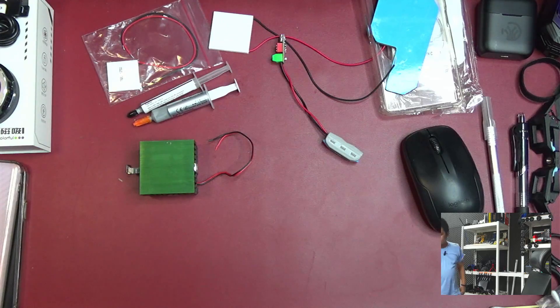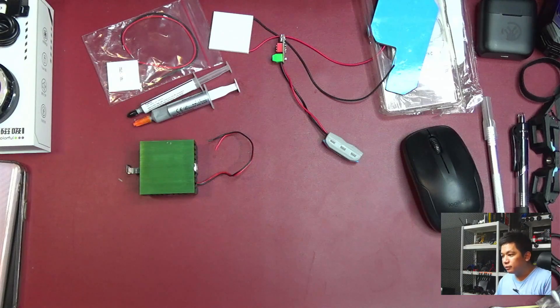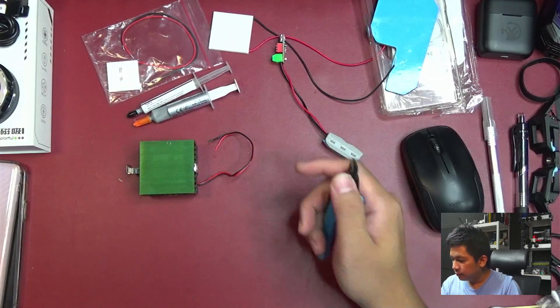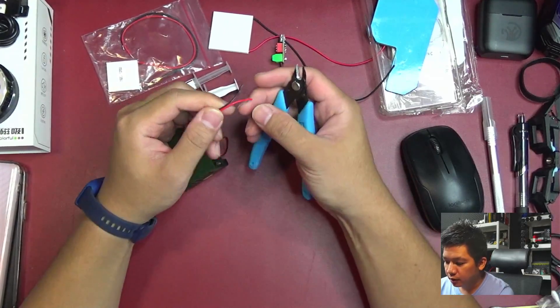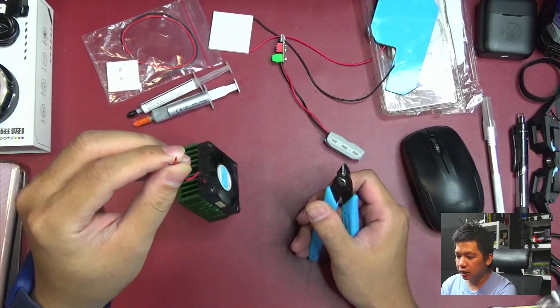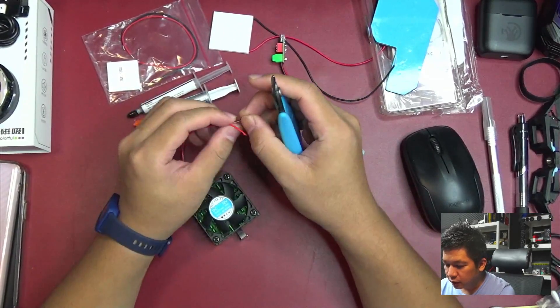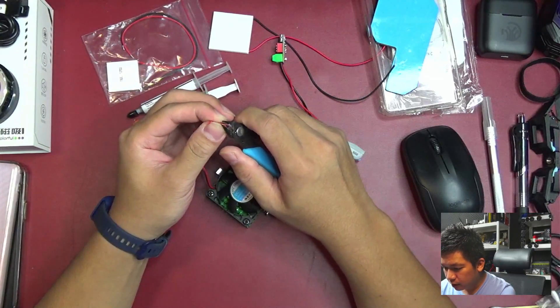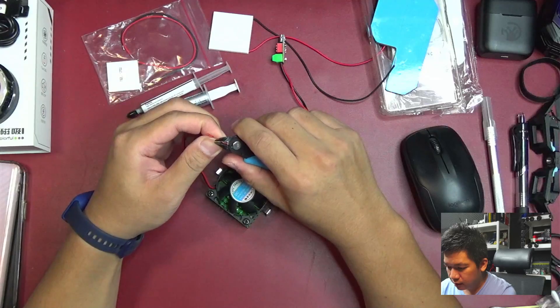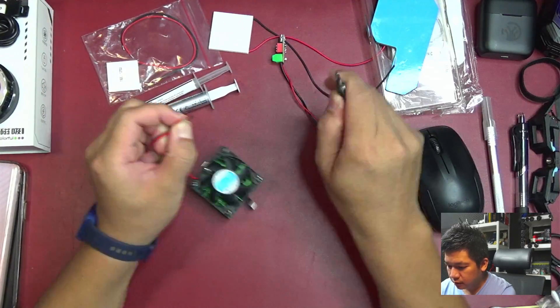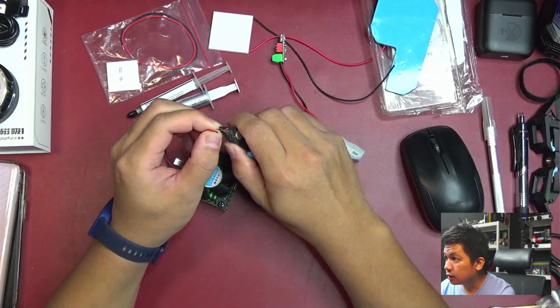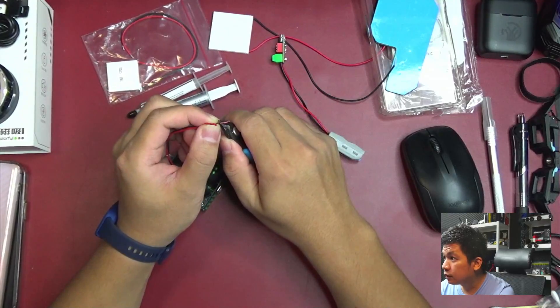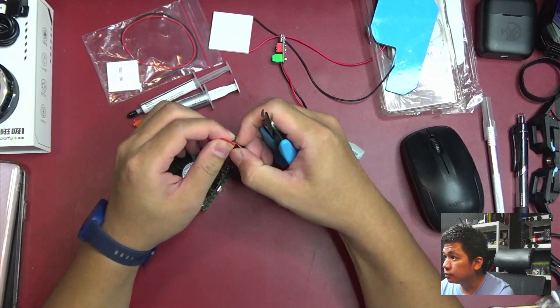Yang gue kesel sekarang, kemarin udah dibikinin tembaga sama udah dipotongin sama om Frank, cuma ilang, gue ilangin. Sayang banget. Ini jadi bikinnya gampang ya, udah kerakit semua soalnya. Beli jadi aja, ini nggak sampai Rp50.000 seinget gue, Rp30.000-an. Jeremiah aman.